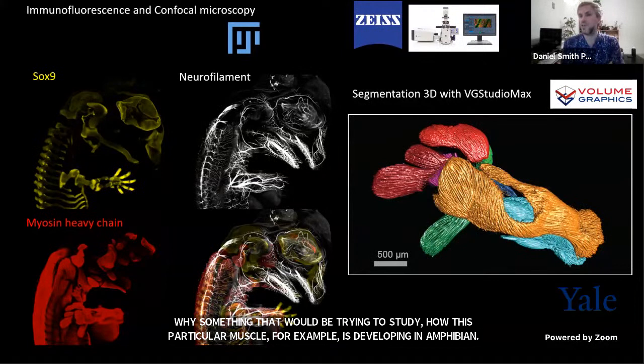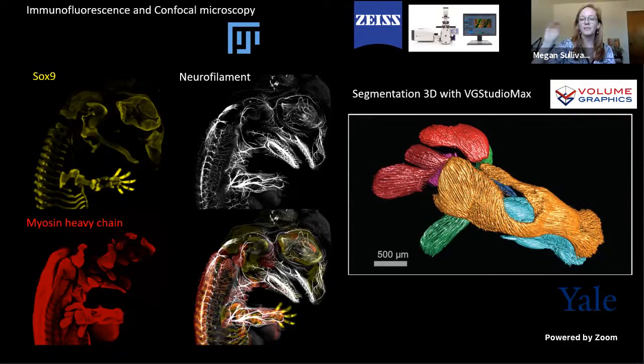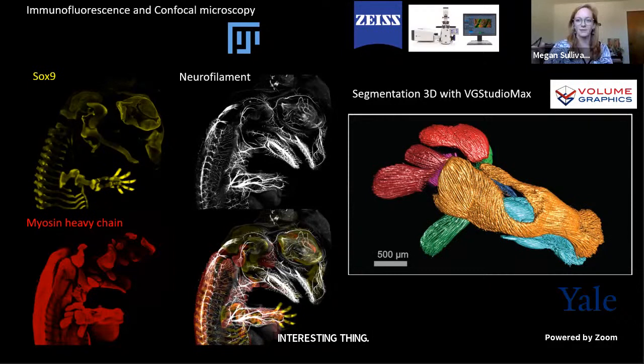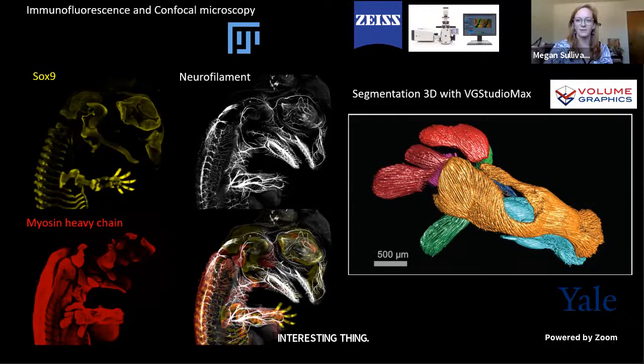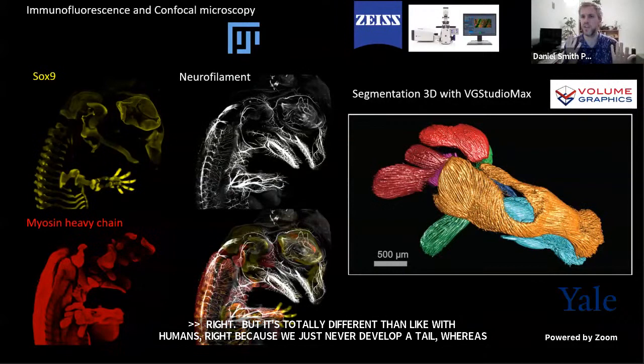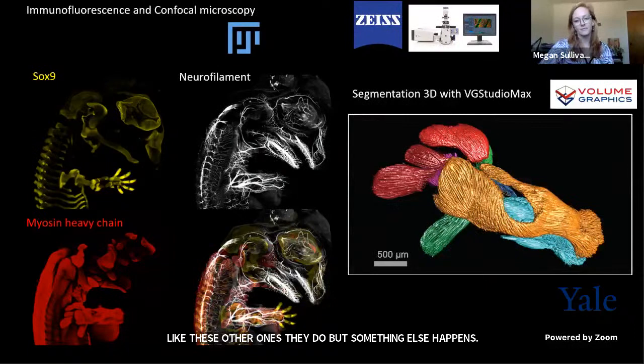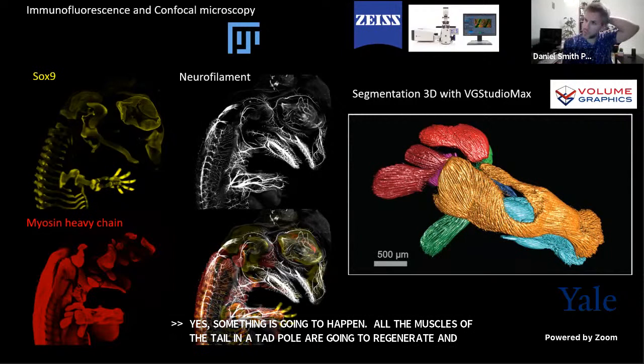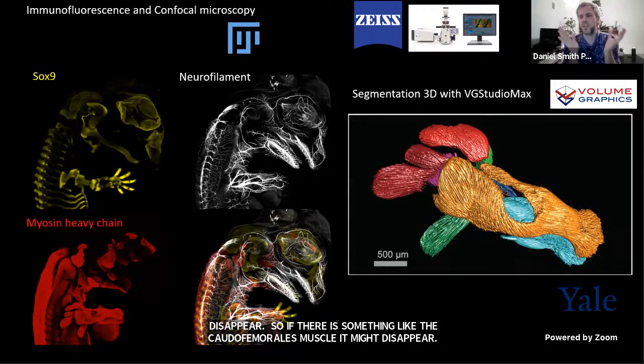But it's totally different than with humans, right? Because we just never develop a tail. Whereas frogs do, but then something happens — all the muscles of the tail in a tadpole degenerate and disappear. So if there's something like the caudofemoralis muscle, it might disappear. In all mammals, even those that have a tail, the muscle that in reptiles would pull the leg backwards doesn't develop that way — it remains just within the limb. All the muscles of the tail in mammals are other muscles not related to the locomotory muscles of reptiles.